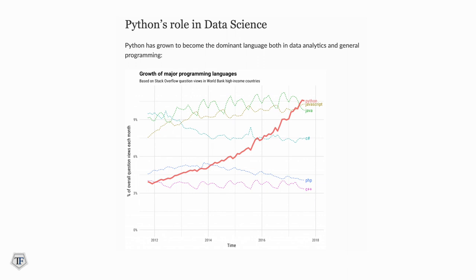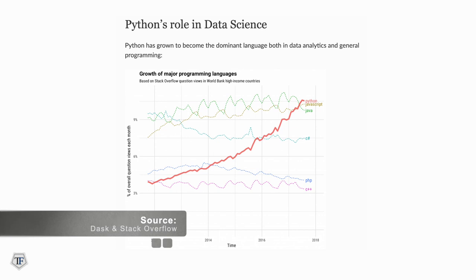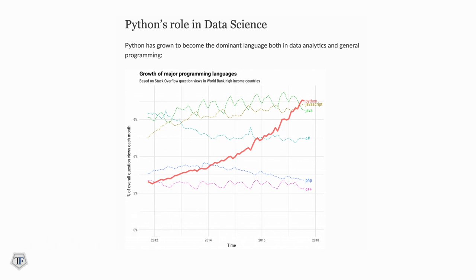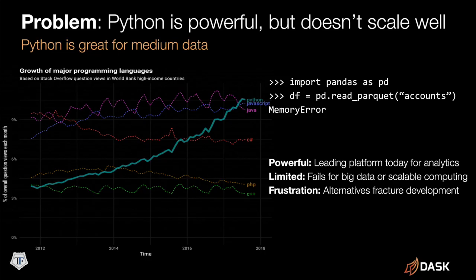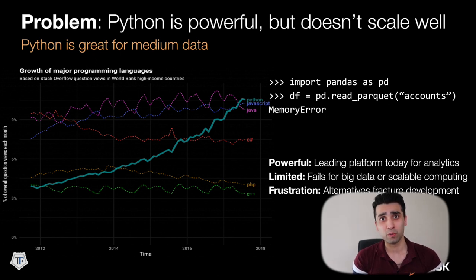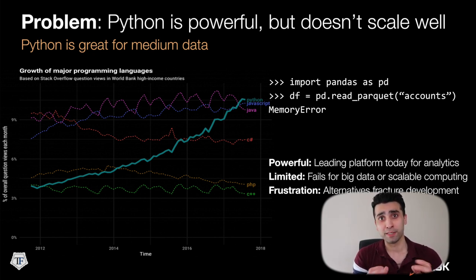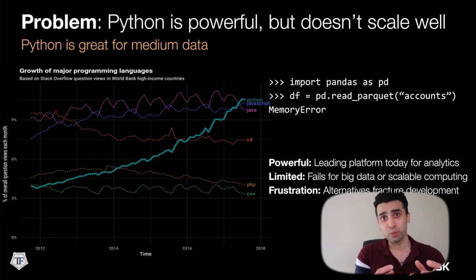Dask is growing alongside Python's popularity — Python is becoming more popular day by day, and Dask is built within the same ecosystem. Dask helps with heavy lifting when building machine learning models where computation takes a lot of time. Python has a scaling problem, but Dask addresses that through multiple processing on different cores. We'll revisit the SimpleImputer example — which took 20-30 seconds — and replicate it using Dask.